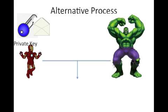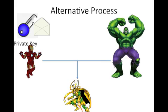For example, let's say Loki is again trying to decrypt the message of the Incredible Hulk. Loki has the public key of Iron Man and the message of the Incredible Hulk.